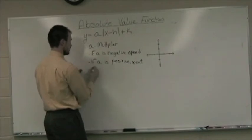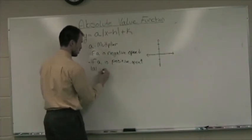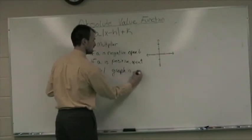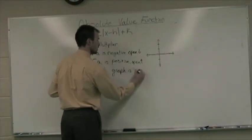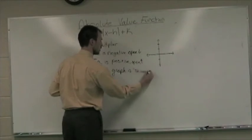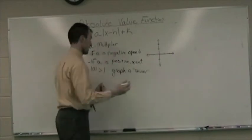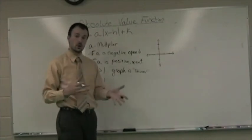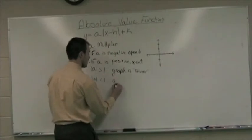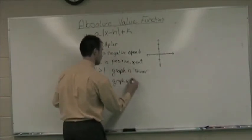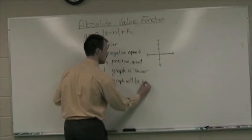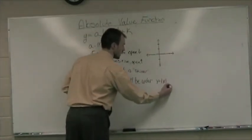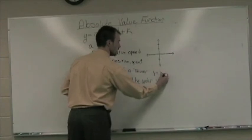That kind of takes care of A. The other two big things. If the absolute value of A is greater than 1, then the graph is, we can use the term skinnier. It's going to be a vertical stretch. It's actually going to thin out the graph. And if the absolute value of A is less than 1 or in between 0 and 1, then the graph will be wider than the graph of Y equals the absolute value of X.